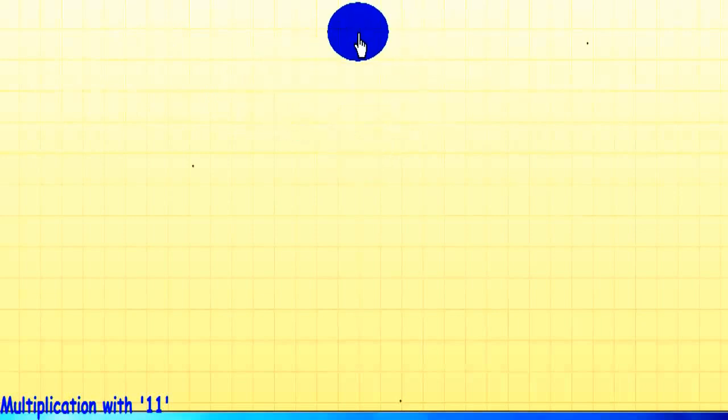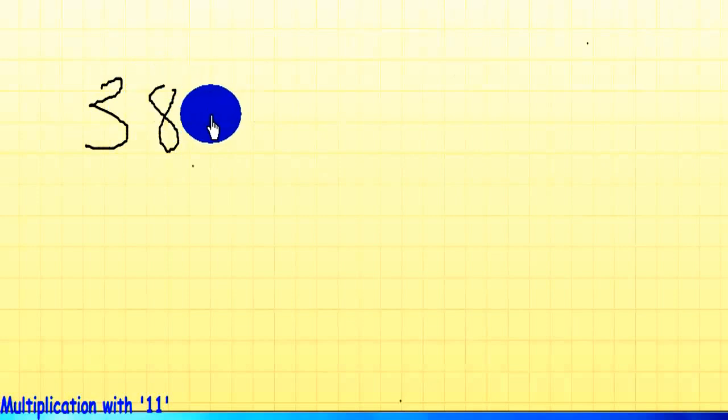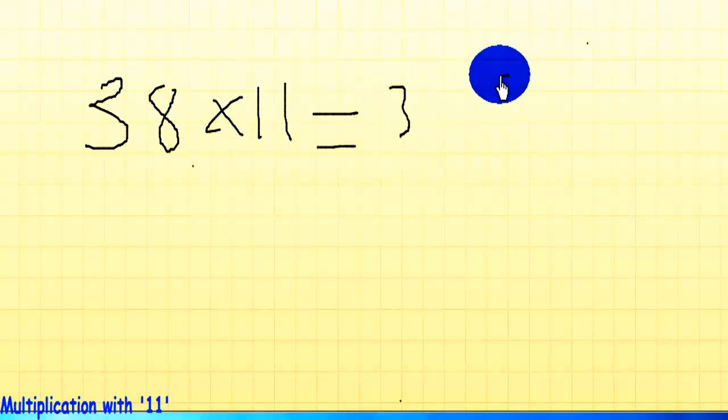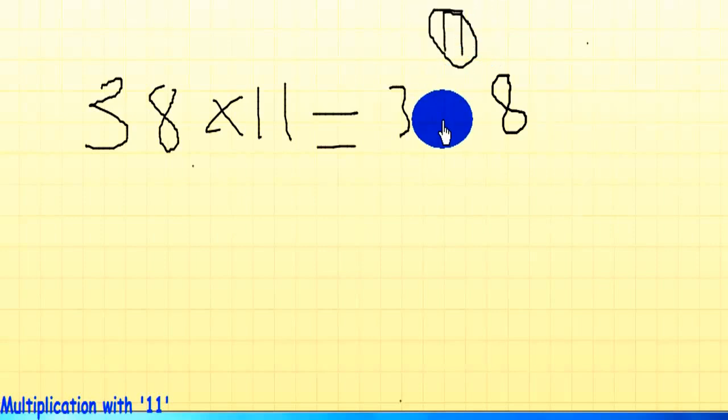Let's take another example, this time 38 times 11. Same as before: 3, 8, but wait, this time we're getting a two-digit number here. 3 plus 8 is 11, so how will we deal with this? Well, this is simple. Whenever you get a two-digit number here, just write the units digit and add the tens digit to the next digit. So 4, 1, 8. That's the answer.